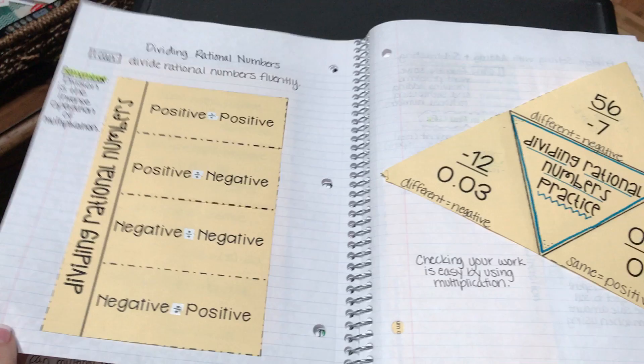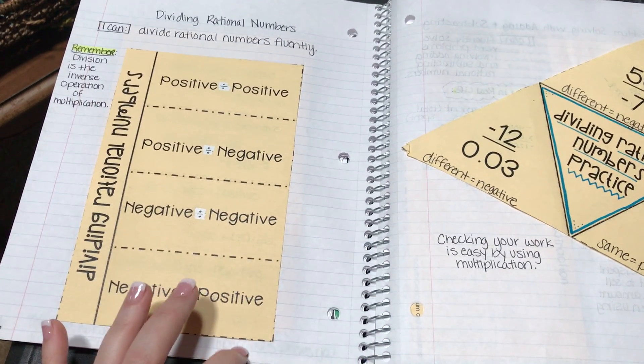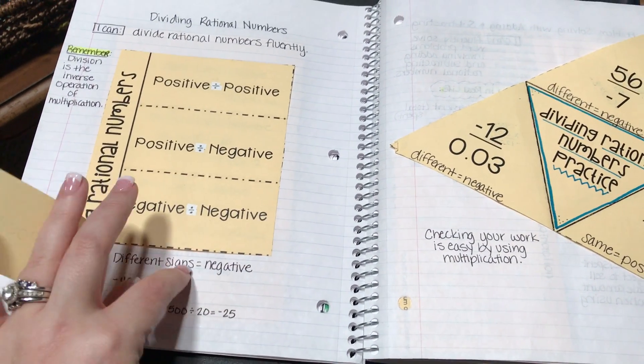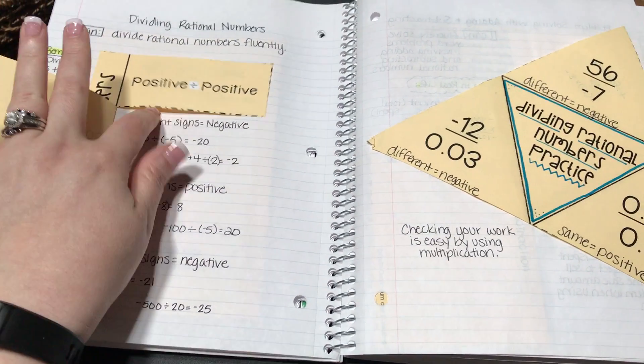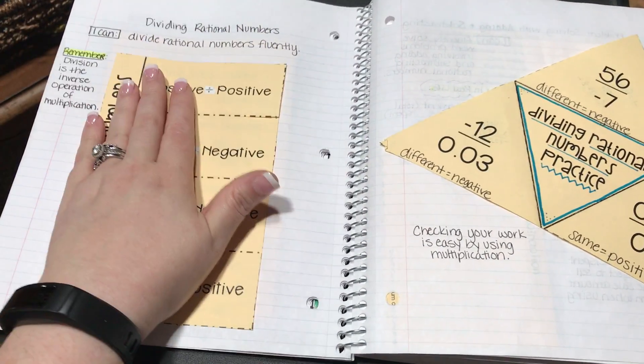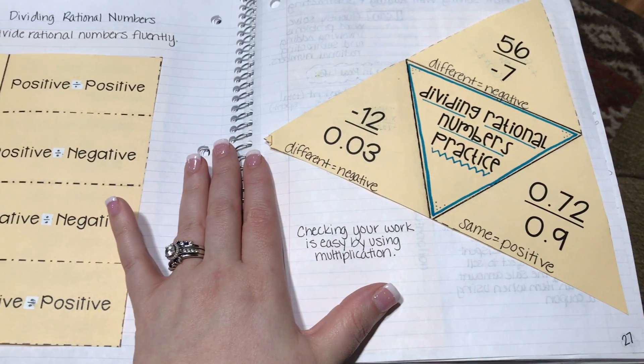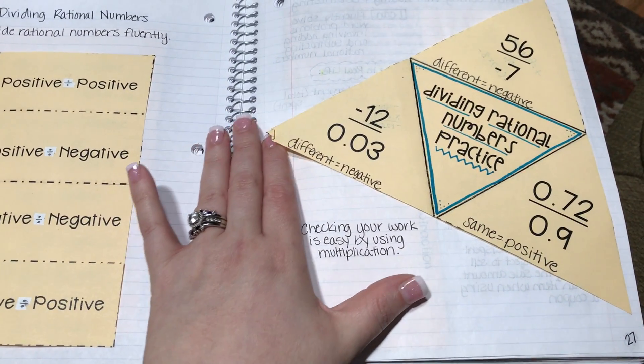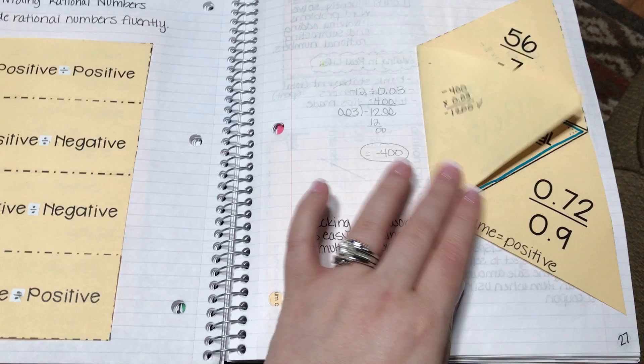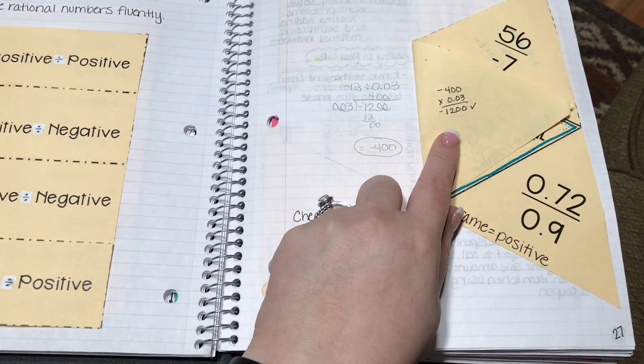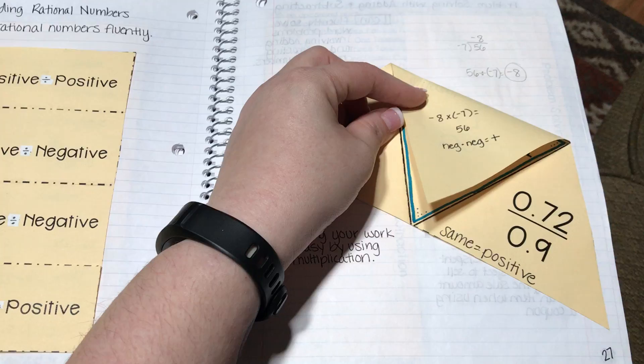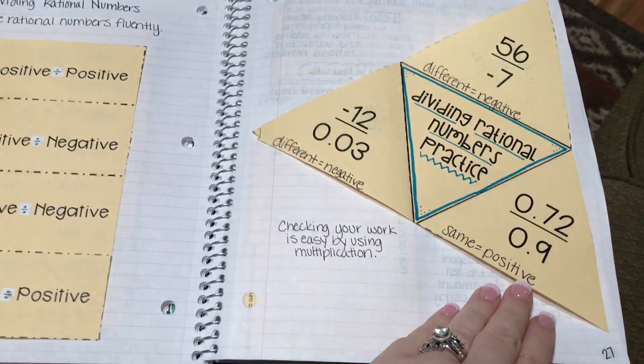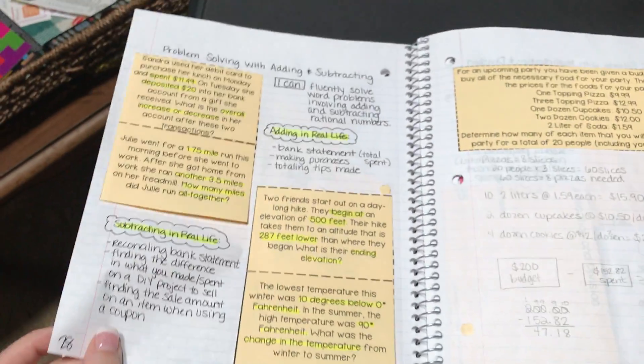The next activity is dividing rational numbers. Again, positive and negative symbols, so it talks about if they have different signs, if they have same signs, and examples for each. Then there's the dividing rational numbers practice flippable and underneath each they solve the problem and check the problem using inverse operations.